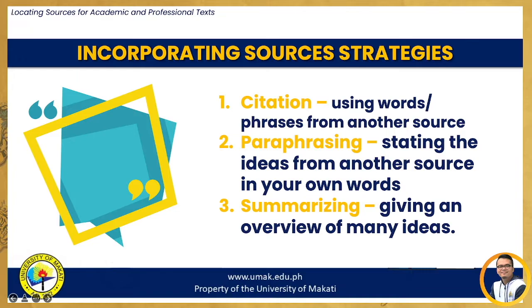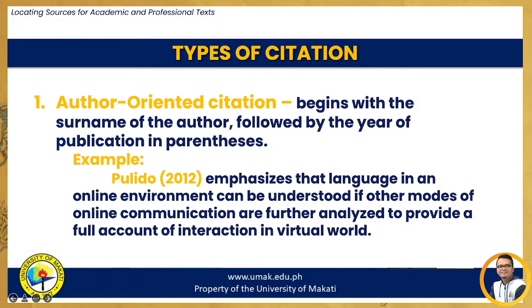Citation means using words and phrases from another source. Paraphrasing means stating the ideas from another source in your own words. Summarizing means giving an overview of many ideas. There are two main types of citation: author-oriented citation and text-oriented citation. When using author-oriented citation, begin with the surname of the author followed by the year of publication in parentheses. For example: Pulido (2012) emphasizes that language in an online environment can be understood if other modes of online communication are further analyzed to provide a full account of interaction in the virtual world.